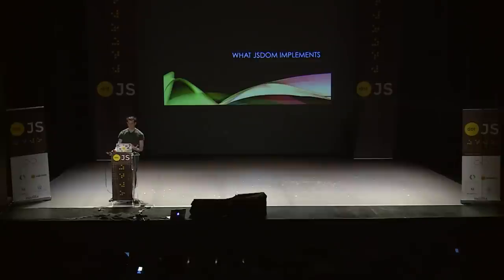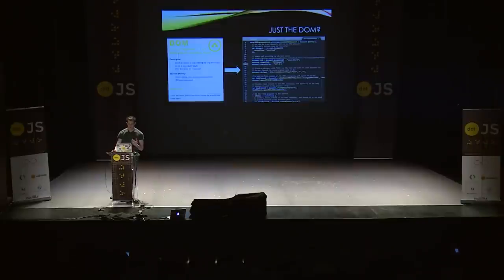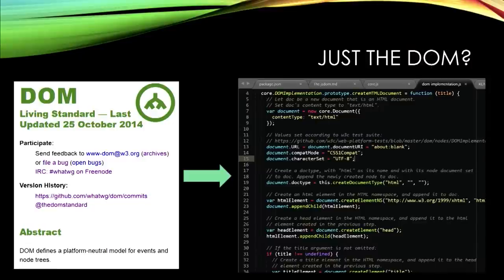Now I want to talk about what exactly we're implementing when we say JSDOM — a JavaScript implementation of the DOM. You might think we just mean: take the actual DOM standard and implement it. Well, it turns out the actual DOM standard is just a single document — a living standard hosted at dom.spec.whatwg.org. It defines only the basics: nodes, node trees, events, attributes, mutation observers, and the concept of a document. But for example, it doesn't define the concept of a window, and it doesn't define any of the HTML elements that might go in those node trees.